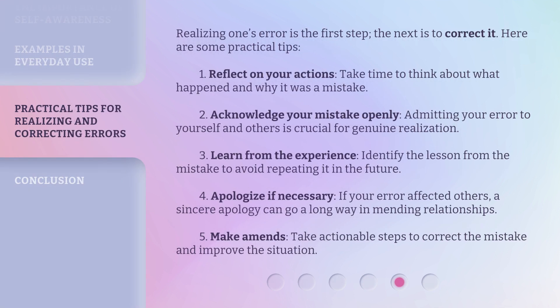Realizing one's error is the first step — the next is to correct it. Here are some practical tips. First, reflect on your actions: take time to think about what happened and why it was a mistake. Second, acknowledge your mistake openly — admitting your error to yourself and others is crucial for genuine realization. Third, learn from the experience: identify the lesson from the mistake to avoid repeating it in the future. Fourth, apologize if necessary — if your error affected others, a sincere apology can go a long way in mending relationships. Fifth, make amends: take actionable steps to correct the mistake and improve the situation.